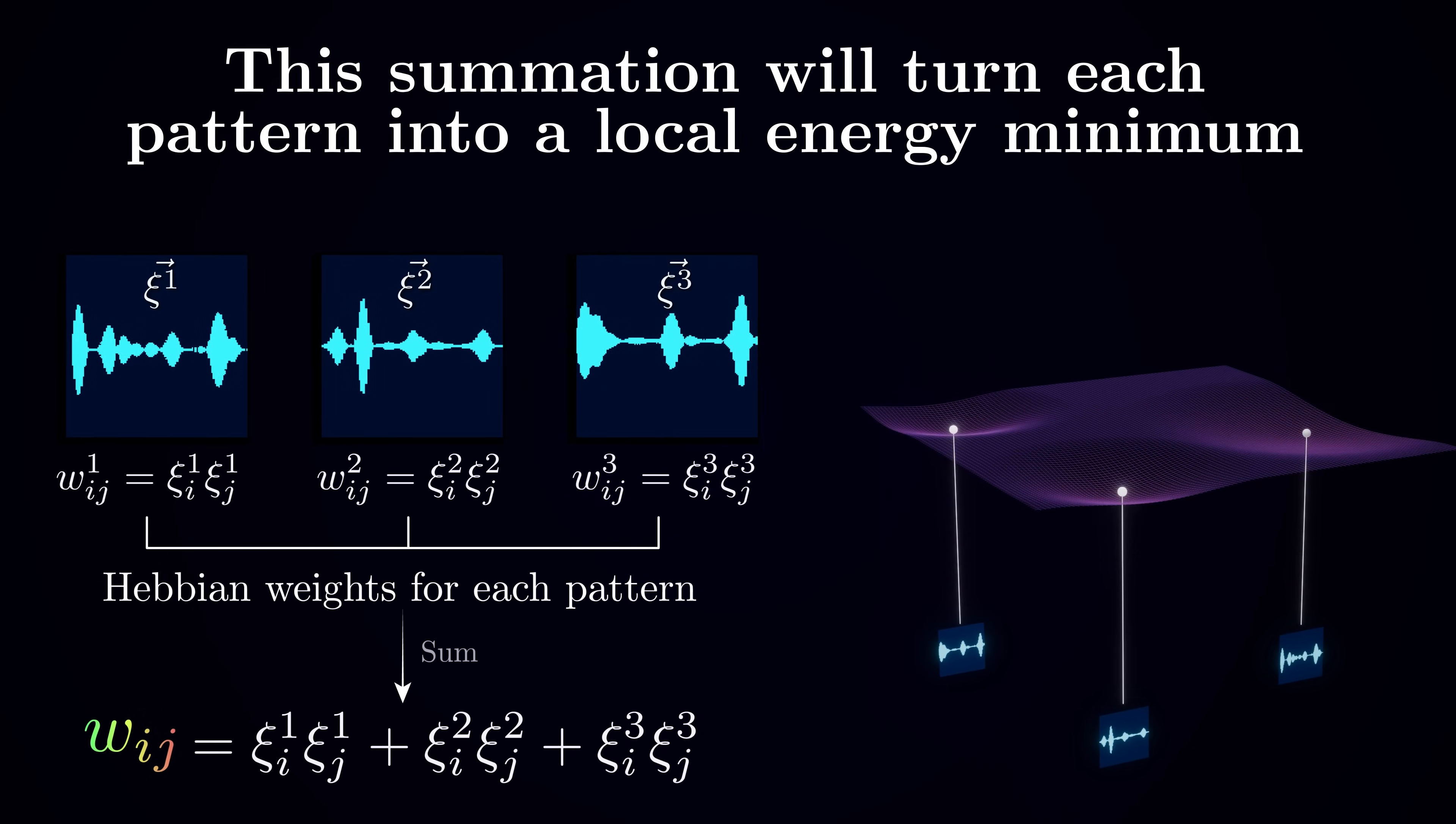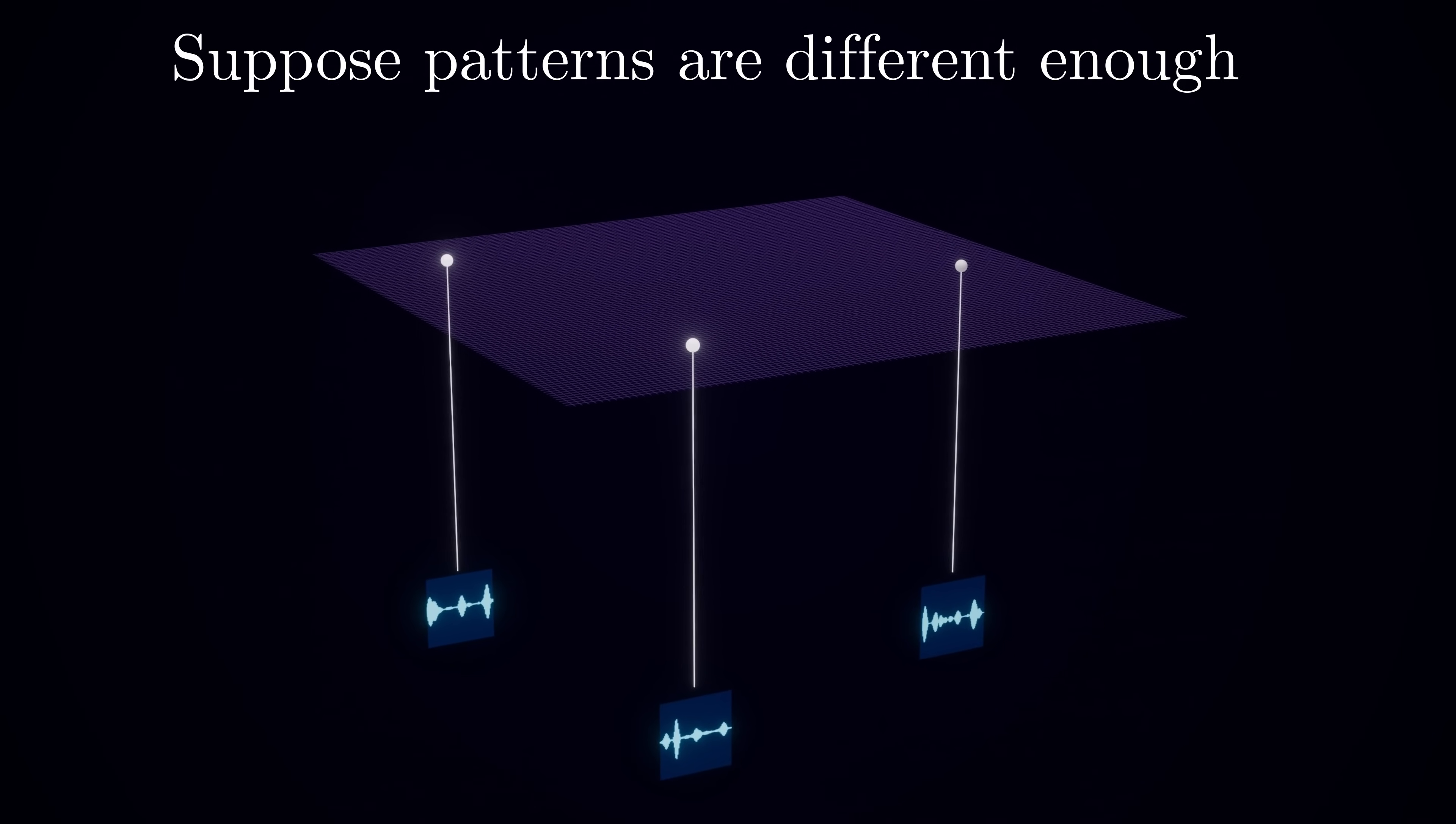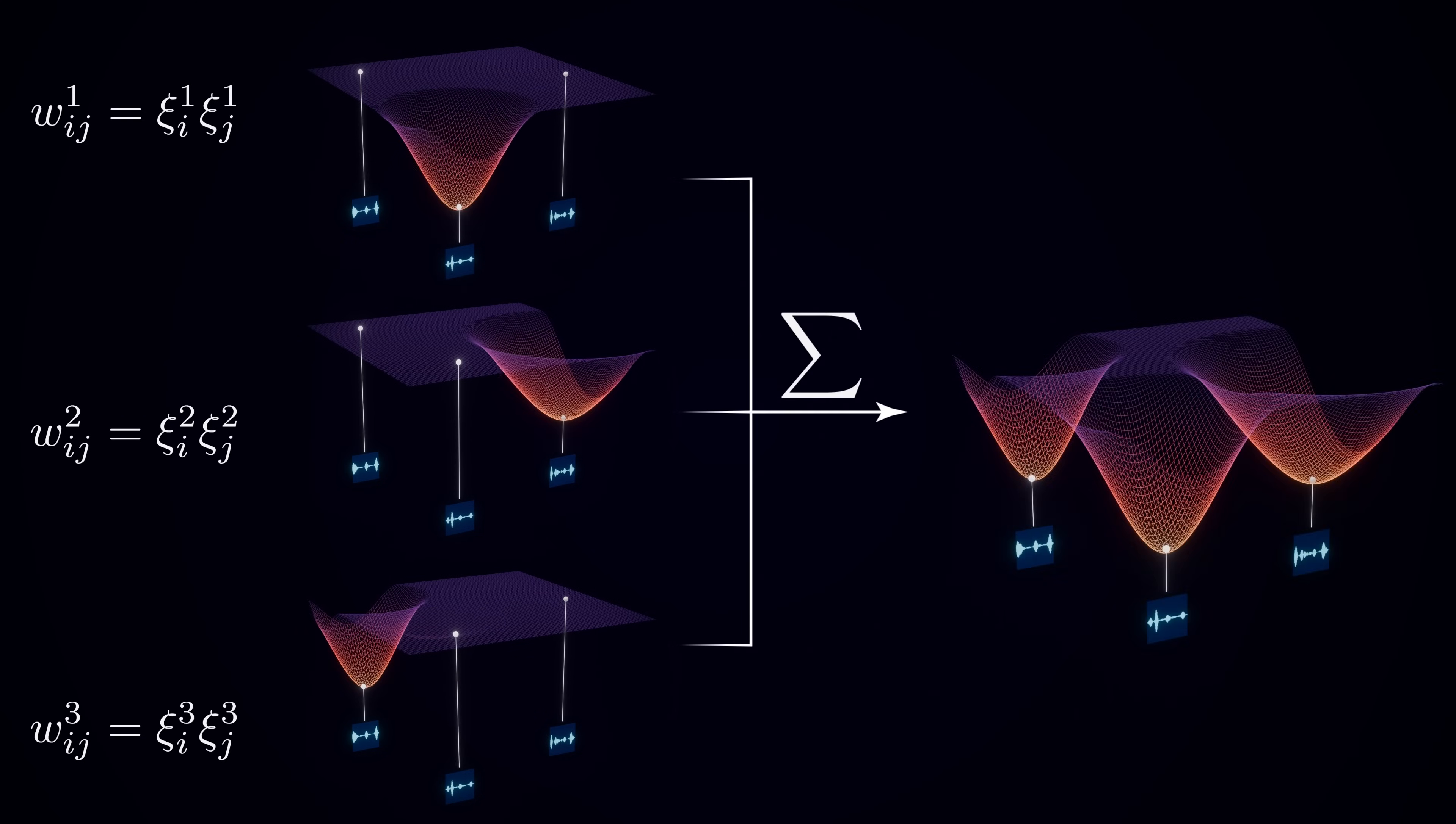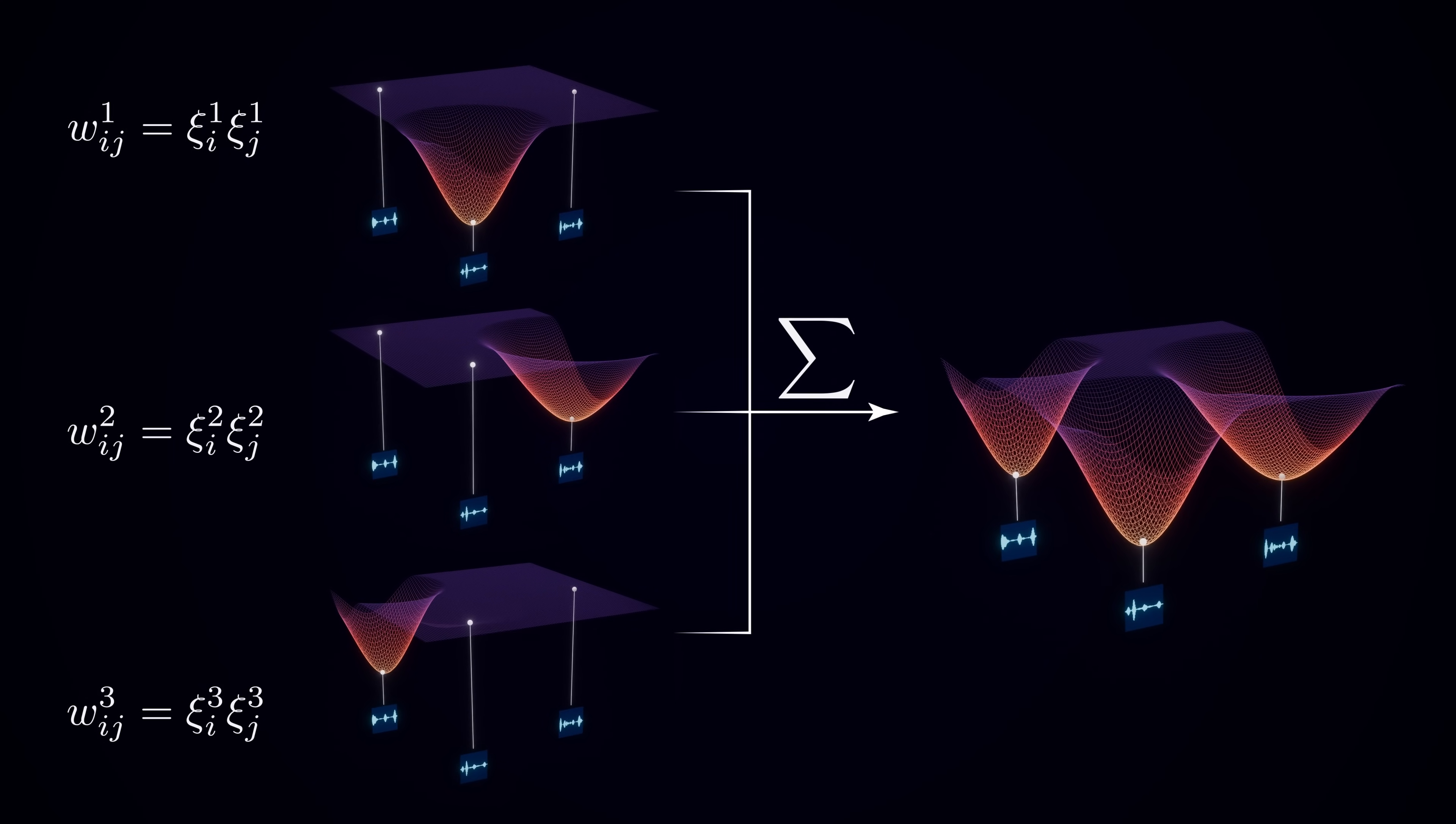However, intuitively, if the patterns you want to store are very different, so they are far away in the state space from each other, then if you first independently dig energy wells around each of them and then simply add the energy landscapes together, the resulting surface will have local minima in the same three valleys.